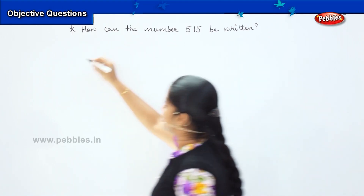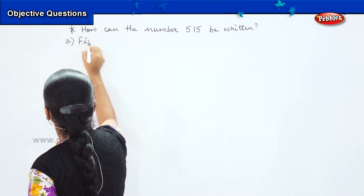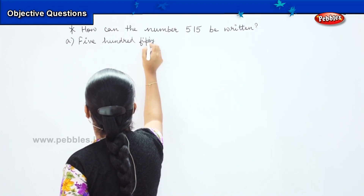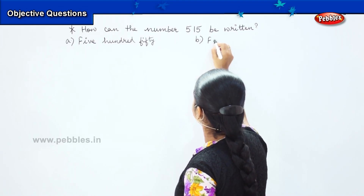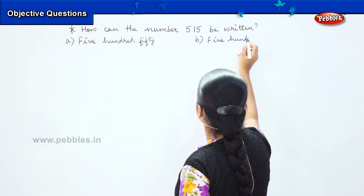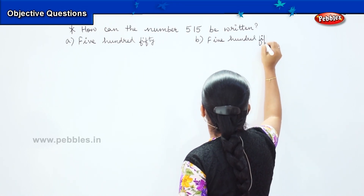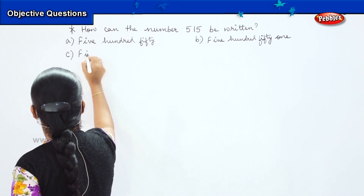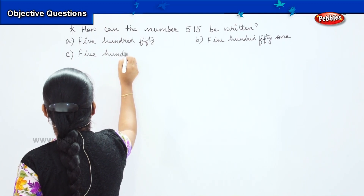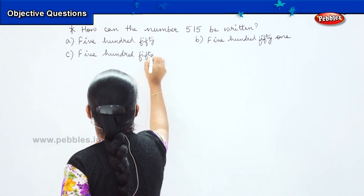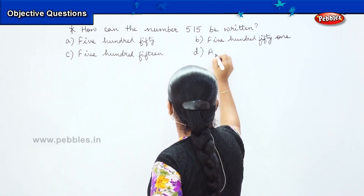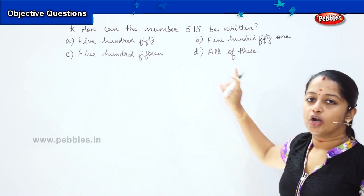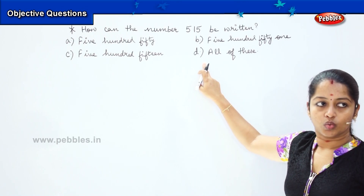How can we write the number 515? That is my question. And my options are: first option is 5, 100, 50; the second option is 5, 100, 51; my third option is 5, 100, 15; and my last option is all of these. So, one number name cannot have all the options, so my option D is ruled out.